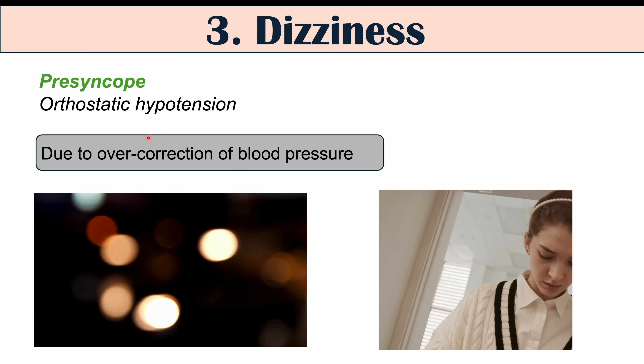Elevated amlodipine levels can also occur if you are eating too much grapefruit, as grapefruit inhibits that same enzyme, CYP3A4, in the liver. Certain other medications can also impact that liver enzyme — for instance, antibiotics like clarithromycin or erythromycin, or certain antidepressants like fluoxetine (Prozac). Often the correction for dizziness involves a change in other medications, a reduction in the dosing of amlodipine, or removal of certain dietary factors like grapefruit consumption.